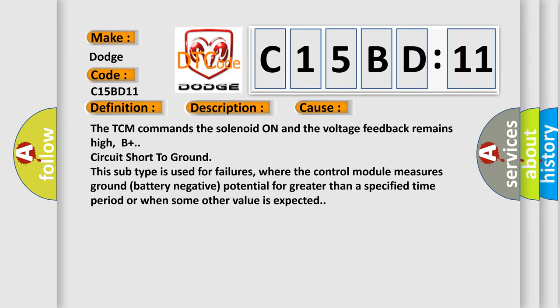This subtype is used for failures where the control module measures ground battery negative potential for greater than a specified time period or when some other value is expected.